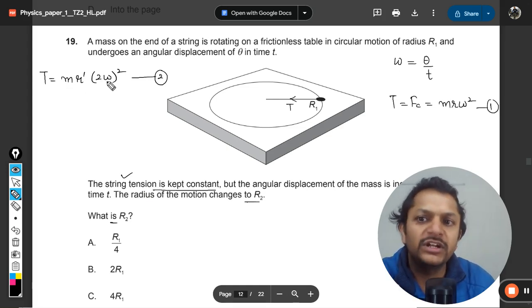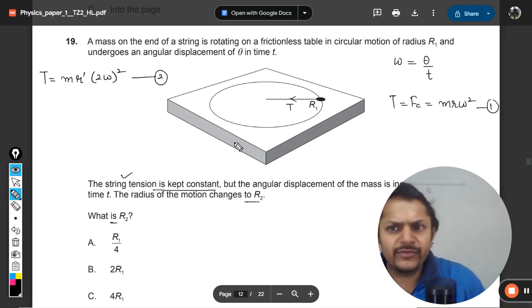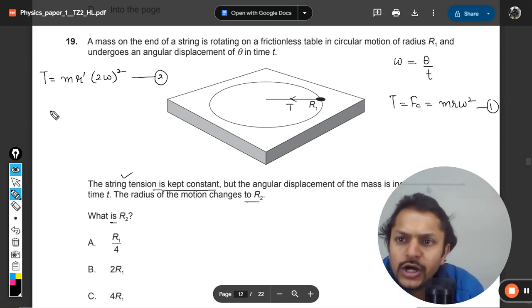So these two equations are equal to each other. One is equal to... clearly when omega is multiplied by 2, so this equation is multiplied by 4, so radius will become 1 by 4. I believe, yes, radius will be 1 by 4, isn't it? Omega is doubled, yeah, the radius will be 1 by 4.